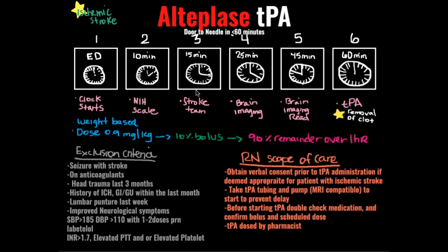Step three: the stroke team should have evaluated the patient within 15 minutes of arrival, and the patient should have been seen by a neurologist. During this time, if you are suspecting an ischemic stroke, you want to go through the exclusion criteria to determine whether this patient is a candidate for TPA.